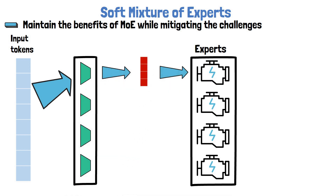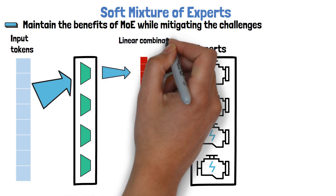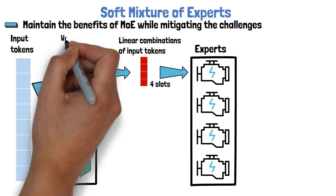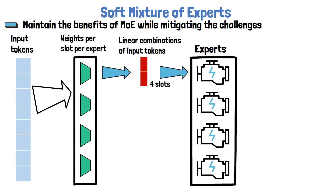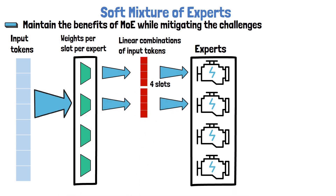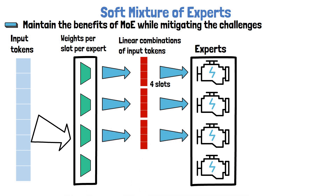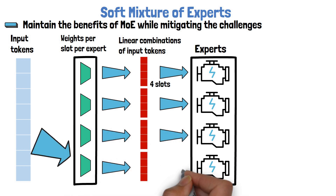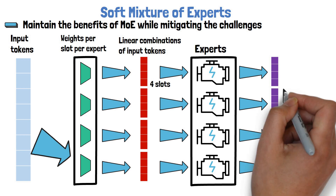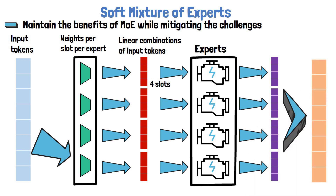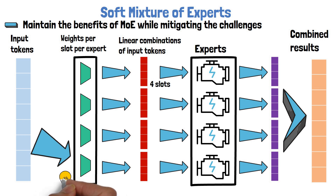In the example here, the input for the expert is of size 4, so we have 4 slots, and each slot in the input is a linear combination of all input tokens. So in the weights layer we actually have weights per slot per expert. This process is repeated for each expert, so for the second one we also get the linear combinations, and same for the third and fourth expert. Each expert then yields an output for each of its slots, and then the expert results are combined together, where we know how much each expert should contribute to each slot in the final result, based on the relative weight this token got from the first step.